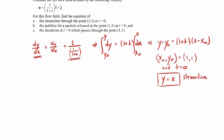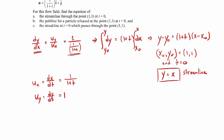Now let's do the path line. For the path line, the governing equation is that the x velocity is dx/dt and the y velocity is dy/dt. The x velocity is 1 over 1 plus t, and the y component is just equal to 1. So we can solve those differential equations.